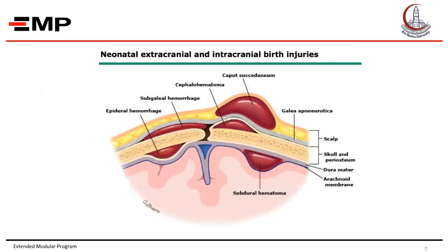This figure shows neonatal intracranial birth injuries. Caput succedaneum is a superficial swelling that is extraperiosteal, occurring over the presenting part during delivery. The edema may cross the suture line and sometimes bleeding might happen inside this edema. Cephalhematoma is hemorrhage under the periosteum of the skull — it is subperiosteal. The area of swelling does not cross the suture line, it is usually a firm swelling, unilateral in 85% of cases, and resolves in 2 to 12 weeks.